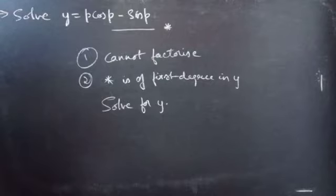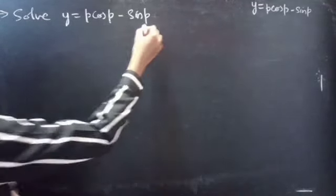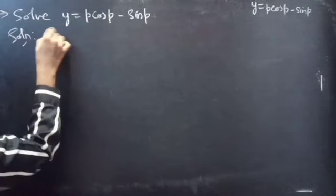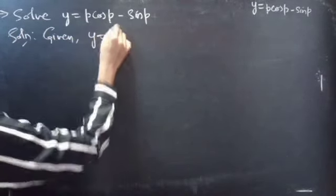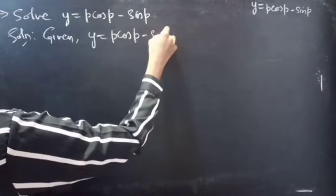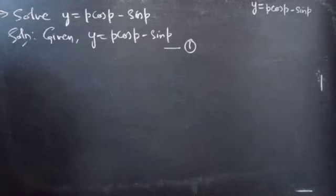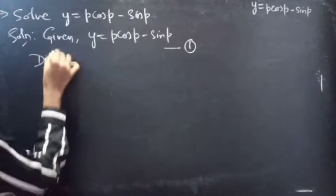Now coming to the problem, consider the given equation as equation 1. Solution: given equation y equals p·cos(p) minus sin(p). We have considered this as equation 1. Now let's differentiate it with respect to x.